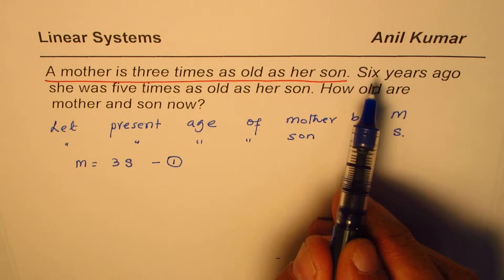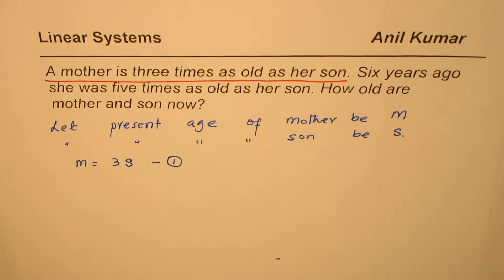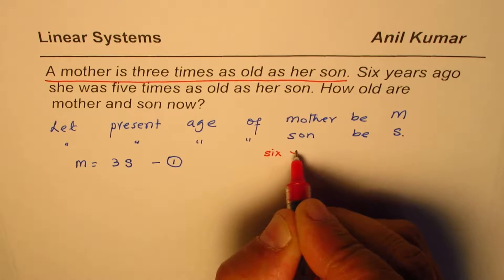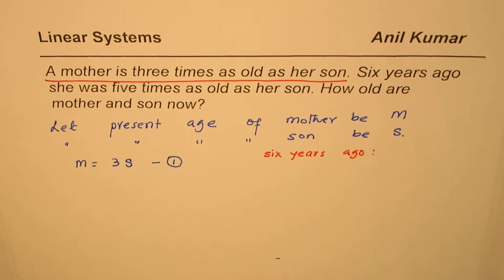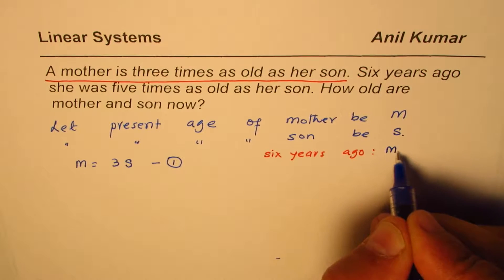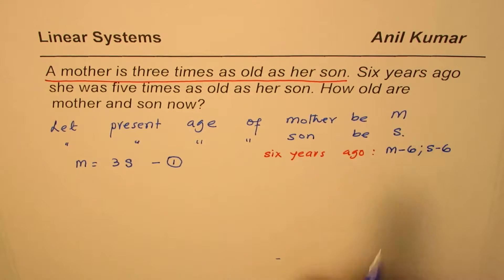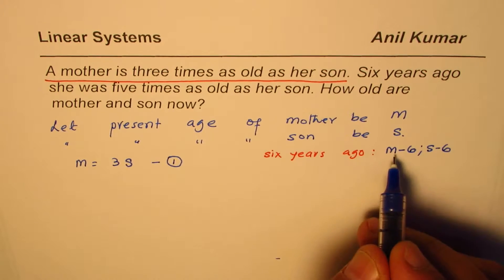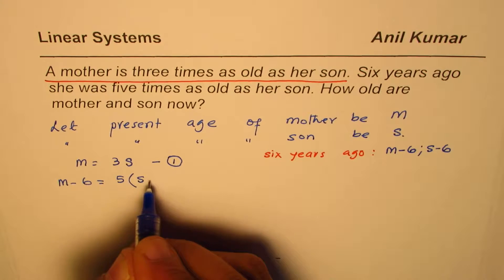The second part is: six years ago, she was five times as old as her son. When we say six years ago, their ages six years ago would be: mother's age was m minus six, and son's age was s minus six. So six years ago, she was five times as old as her son means m minus six equals five times s minus six. That becomes the second equation.